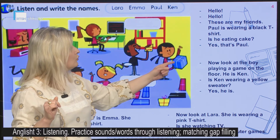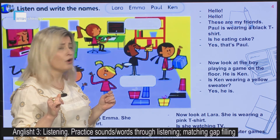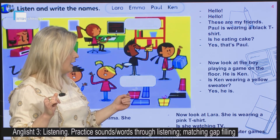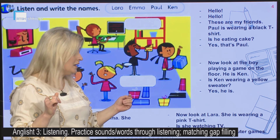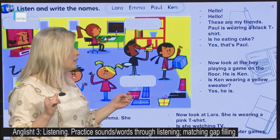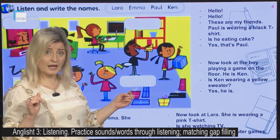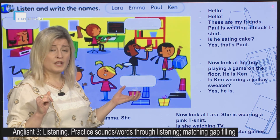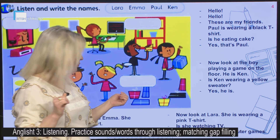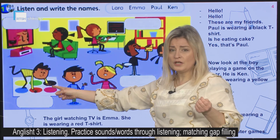Pashtoj. Now, look at the boy playing a game on the floor. Tani i shikojmë djalin që po luan një lojë në dysheme. He is Ken. A i është Ken. Is Ken wearing a yellow sweater? A ka veshur Ken një bluzë të verdhë? Yes, he is. Po, ai ka veshur një bluzë. Ja, ku është? Ken.